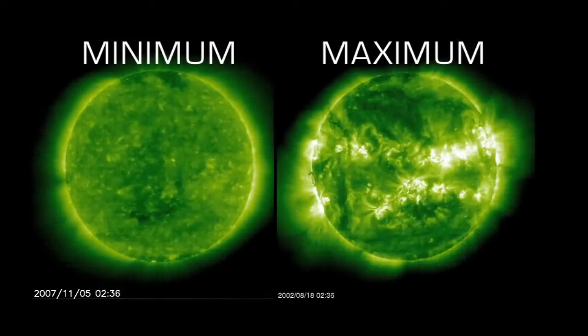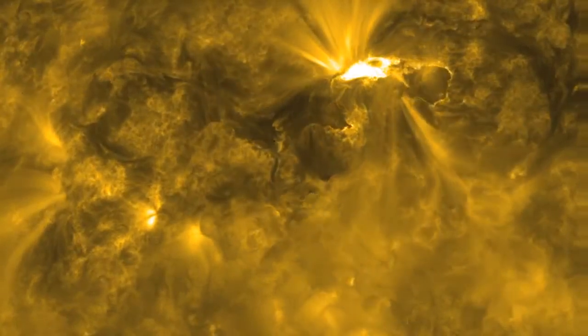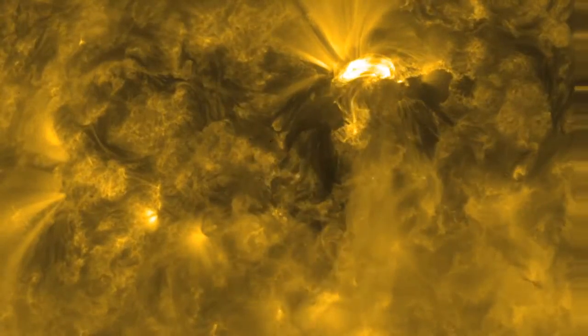Every 11 years, as the Sun reaches its maximum activity, they become bigger and more common, and that increases the chances that one will significantly affect Earth.